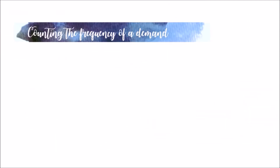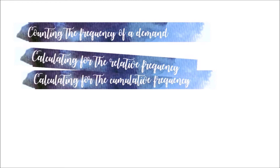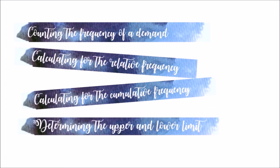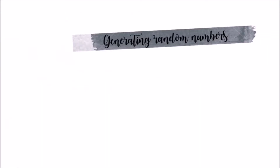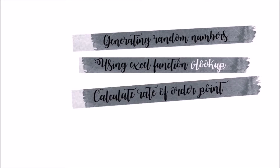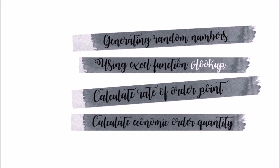Monte Carlo starts with counting the frequency of a demand. Calculating the relative frequency involves dividing the individual frequency by the total frequency. Adding the relative frequency simultaneously results in the cumulative frequency. Cumulative frequency is used to compute the upper and lower limits. Simulation starts by generating random numbers for the demand, and the demand was simulated using Excel's VLOOKUP function. Reorder point and economic order quantity were then calculated and reused to mimic the store routine.